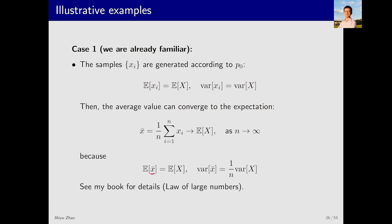x-bar is an unbiased estimate of E[x] and its variance is the variance of x divided by n. As n tends to infinity, the variance approaches zero. This is by the law of large numbers. For more details you can refer to my book or check the Monte Carlo lecture.